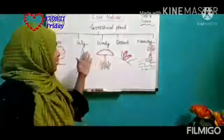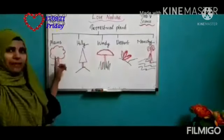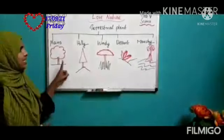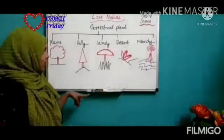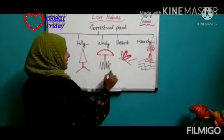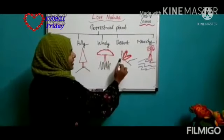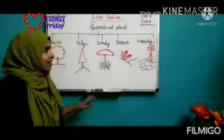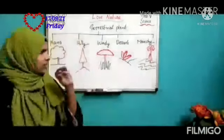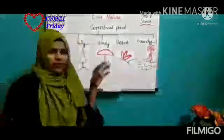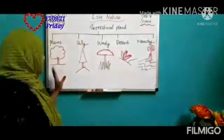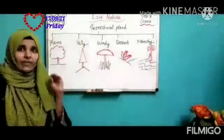You can check this picture. Some plants are living in plains, some in hilly regions, some in windy regions like grassland, some in desert regions, and some in marshy regions — where the soil is very wet and soft, full of water. We can check what different adaptations they follow, one by one.